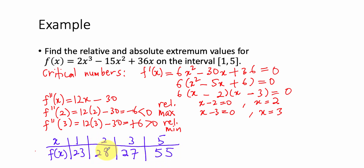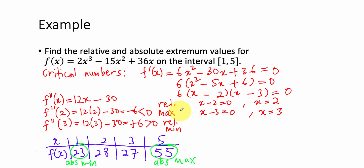From this table, the highest value is 55 and the lowest value is 23. Therefore, x = 5 is the Absolute Maximum and x = 1 is the Absolute Minimum. Relative Maximum at x = 2, Relative Minimum at x = 3, Absolute Minimum at x = 1, Absolute Maximum at x = 5. Thank you!